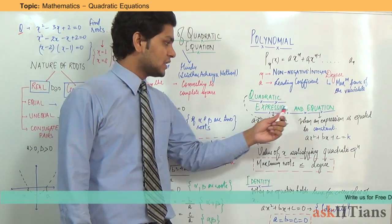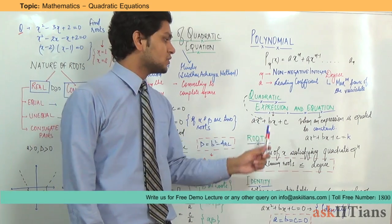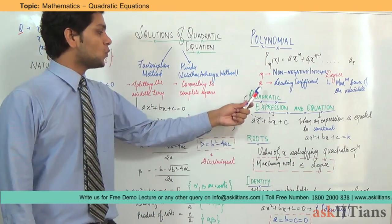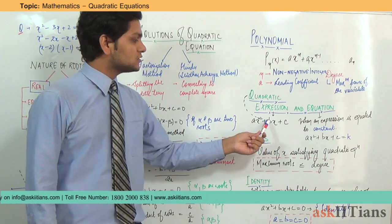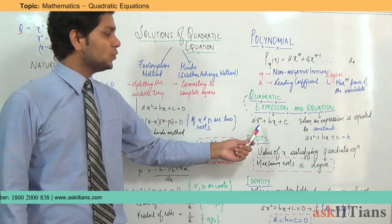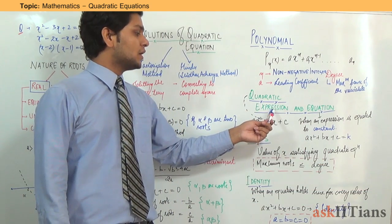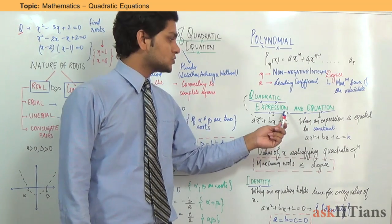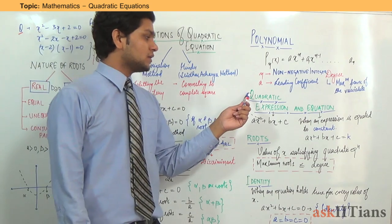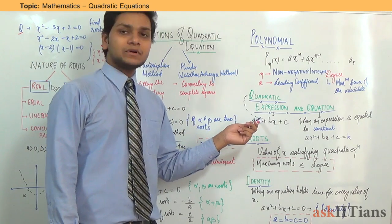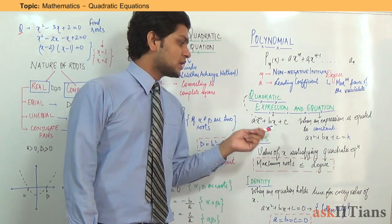Now we will come to the terms quadratic expression and equation. Students always get confused by the difference between expression and equation. A quadratic expression is simply a polynomial written in quadratic form. If you equate this quadratic expression to a constant, then it becomes an equation. Why is it called quadratic? Quadratic refers to the maximum degree of the expression, which is 2. When the degree is 2, it is called quadratic.